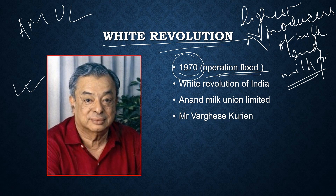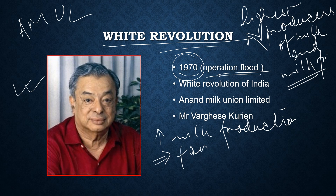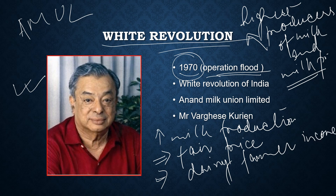Operation Flood ensured three key objectives: increased milk production; easy availability of milk at a fair price to everyone all over India; and increased income for dairy farmers. These were the main outcomes and motto of the white revolution.